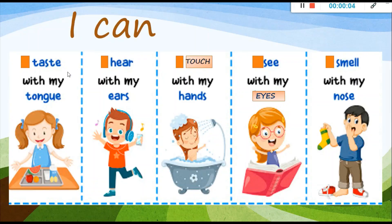So, if we want to do these things — si queremos hacer todas estas cosas — we have to use the parts of the body. For example, I can taste with my tongue — puedo saborear. I can hear with my ears. I can touch with my hands — puedo tocar con mis manos. I can see with my eyes — puedo observar con mis ojos. I can smell with my nose.